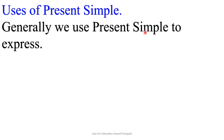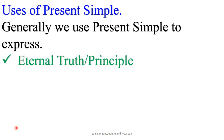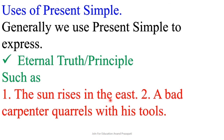Generally, we use present simple to express eternal truth or principle. For example, 'The sun rises in the east' and 'A bad carpenter quarrels with his tools.' 'The sun rises in the east' is an eternal truth, therefore present simple is used. Similarly, 'A bad carpenter quarrels with his tools' is a kind of principle, and simple present tense is used to express this principle.